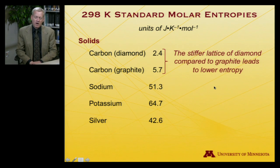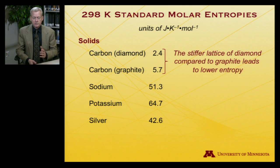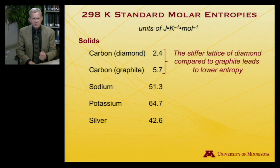Comparing diamond to graphite as an intuitive test: diamond is the hardest substance on the Mohs scale because it has an incredibly stiff lattice — the carbon atoms are in a beautiful diamond-like arrangement. Graphite, on the other hand, is not as stiff; it is easily broken. So graphite has a somewhat higher entropy because it can have a bit more disorder in its solid lattice.